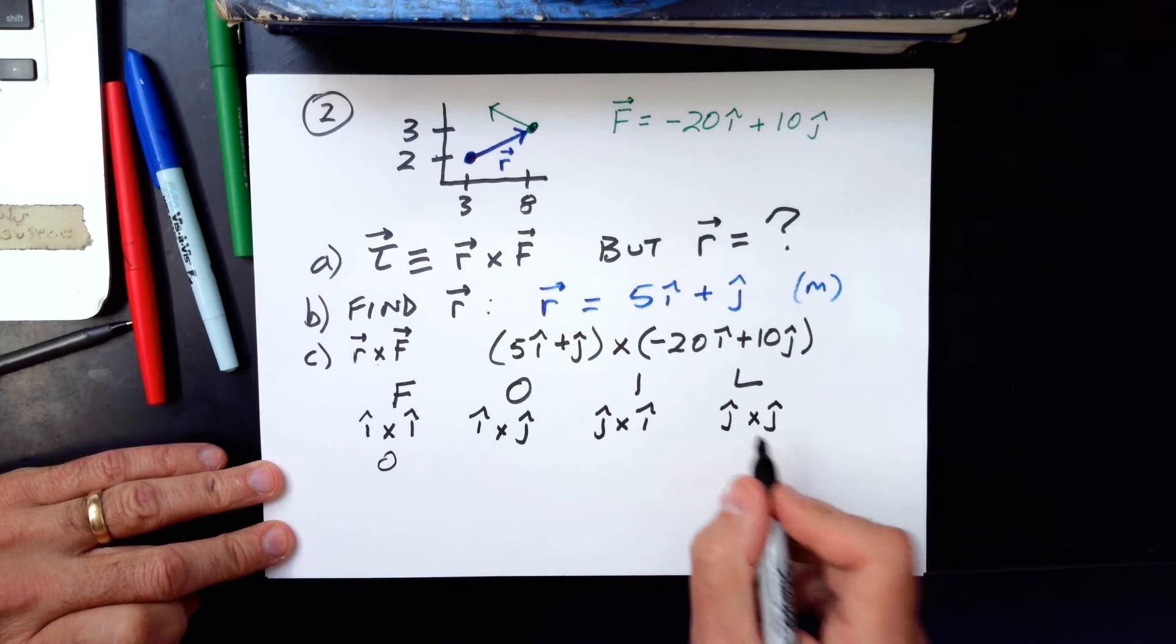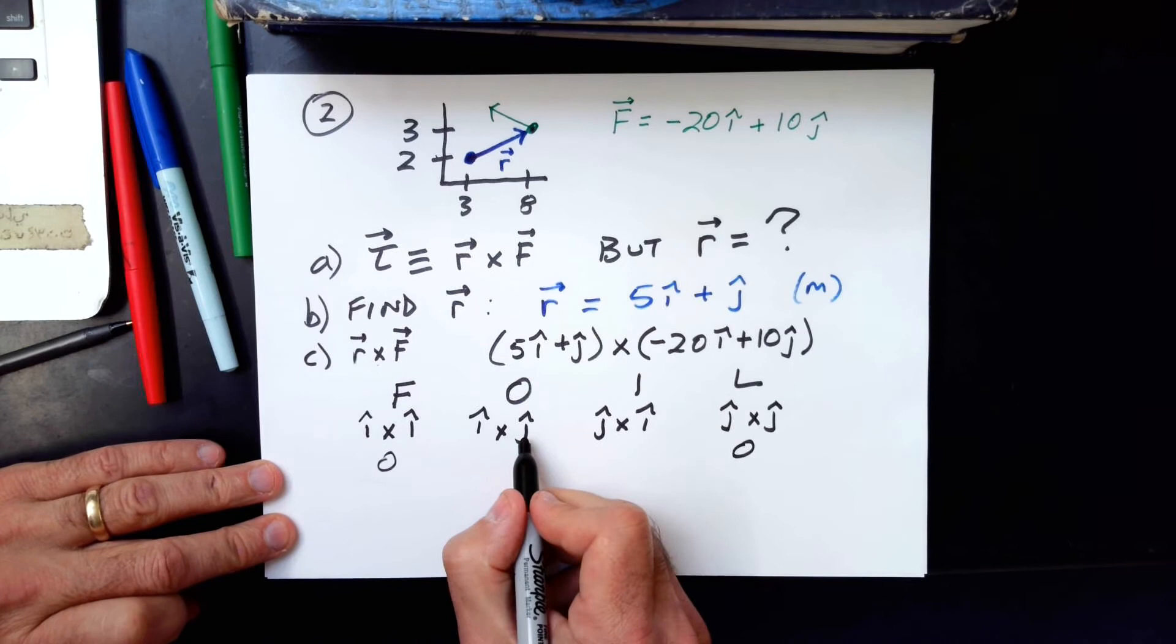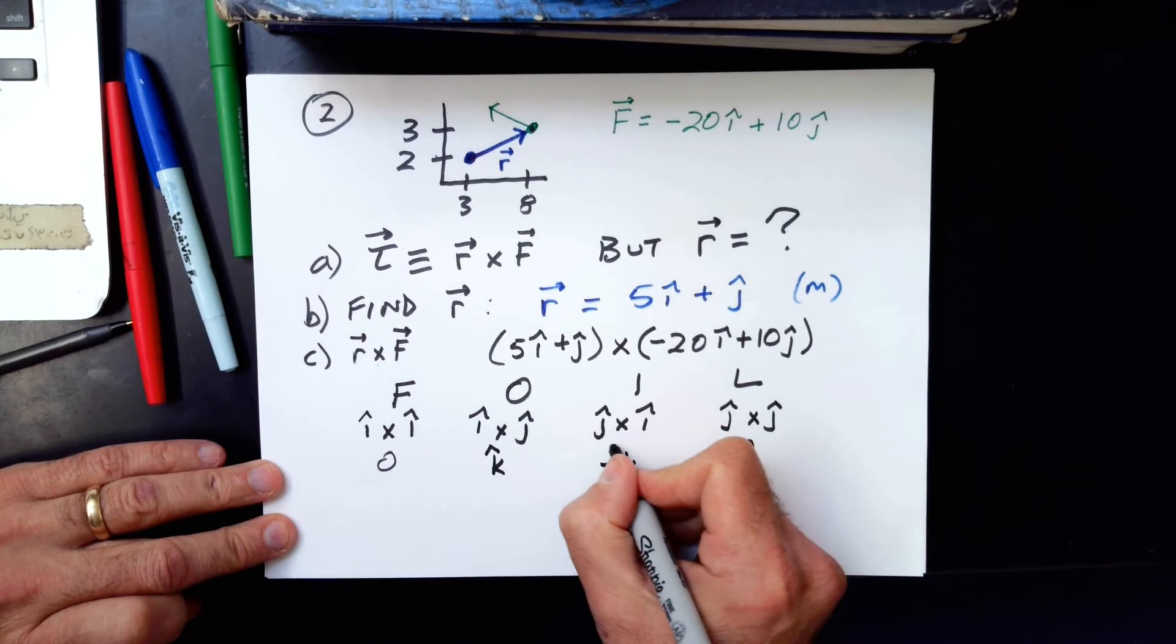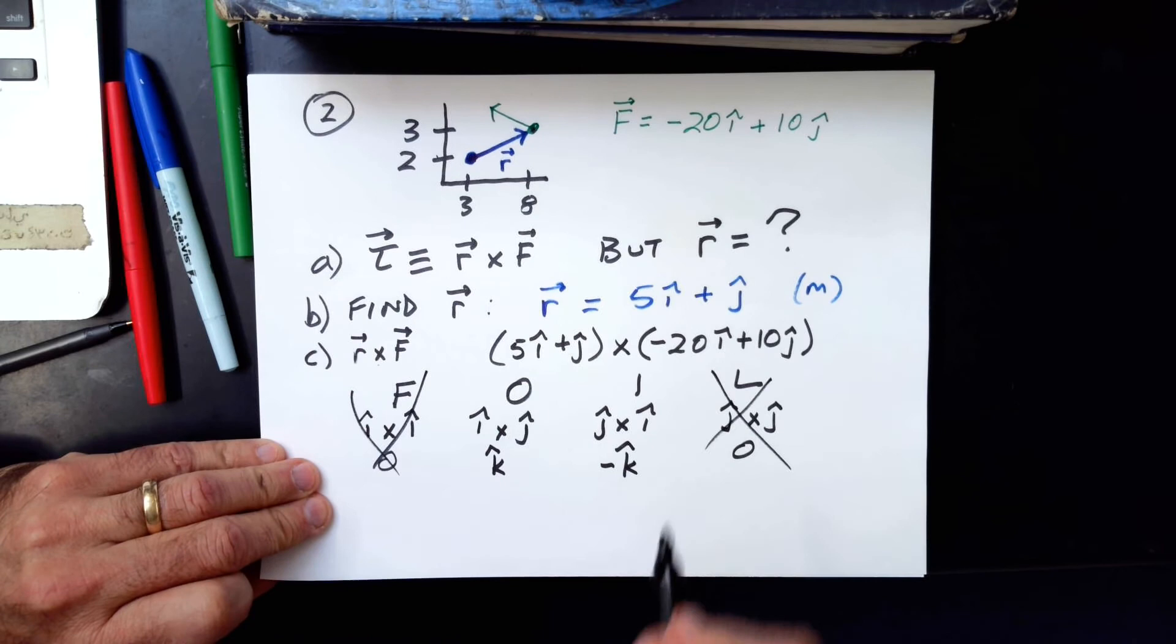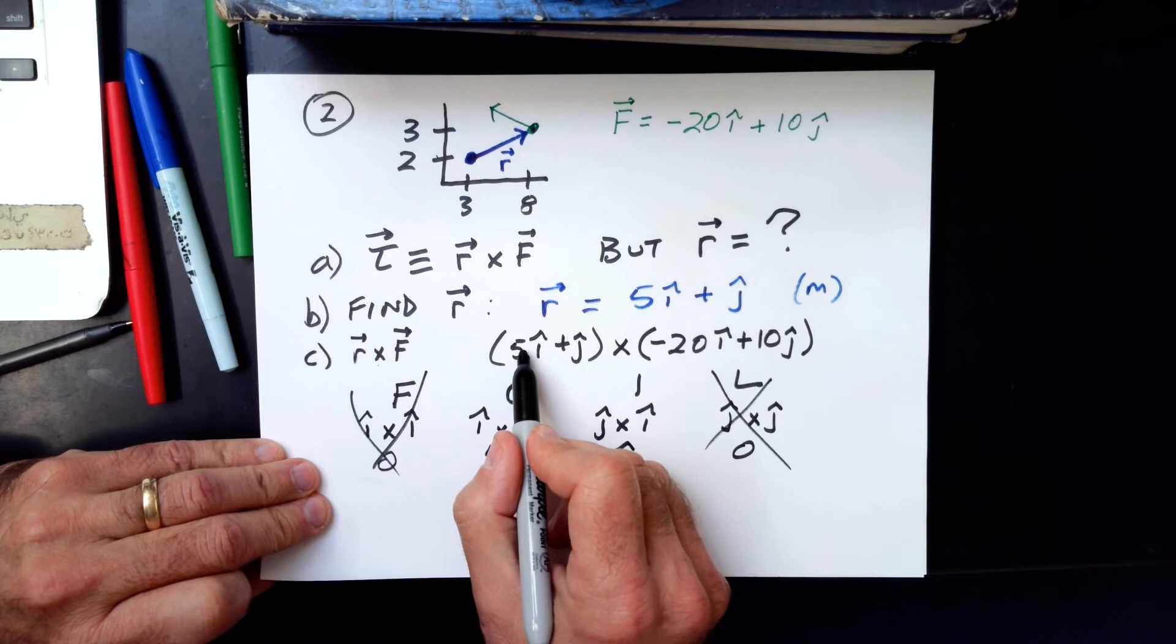So what's I cross I? Well, we already know that's zero. And let's look ahead. J cross J is also zero. So that's going to be easy. I don't even have to figure out those coefficients. I cross J is K. And J cross I is negative K. And again, you should be doing this on your own, pausing the video and see what happens. Now we need these two coefficients. These are done. I don't need those parts because I know I'm multiplying by zero in each case. So those contribute nothing.